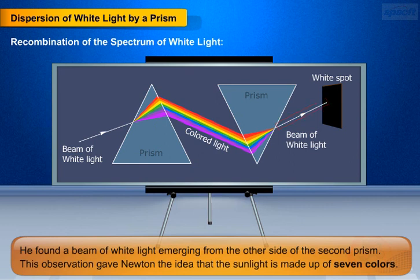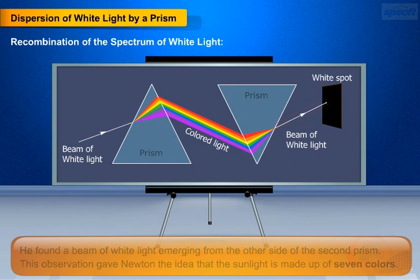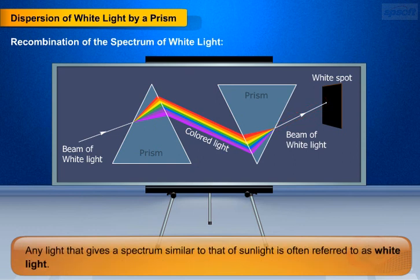This observation gave Newton the idea that the sunlight is made up of seven colors. Then he concluded that any light that gives a spectrum similar to that of sunlight is often referred to as white light.